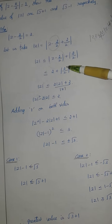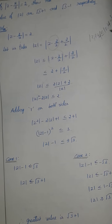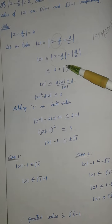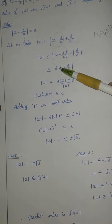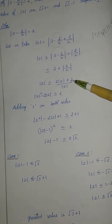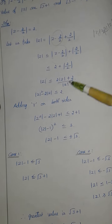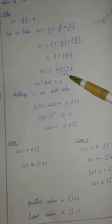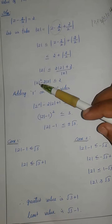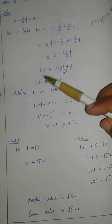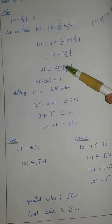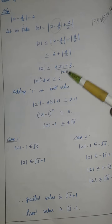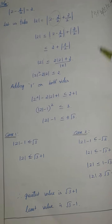So we write: mod Z plus 2 divided by mod Z. Taking the LCM, we get 2 mod Z plus 2 by mod Z. Then, setting mod Z equal to r, the left side gives 2 mod Z minus 2 mod Z, which is less than or equal to 2.